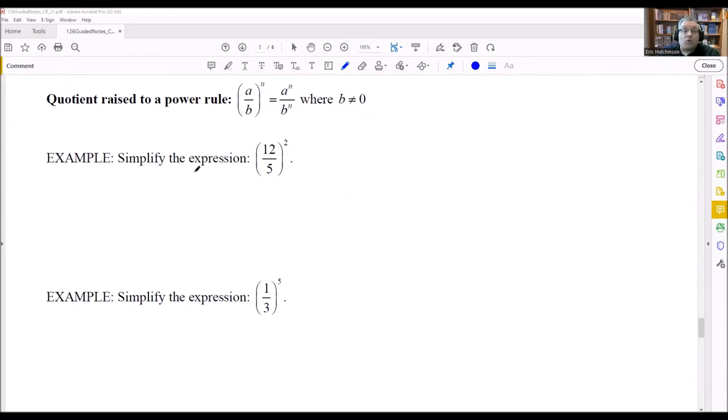We're going to use this rule on this problem here. Both things that we have there are going to be raised to the power of 2. So I have 12 squared and I have 5 squared. 12 squared is going to be 144. 5 squared is 25. You can't reduce that fraction, so that would be your answer.